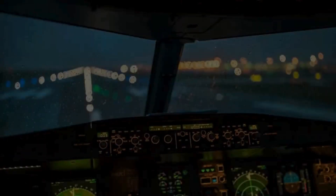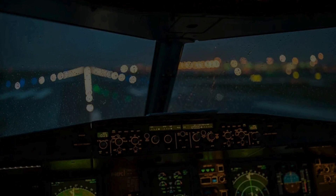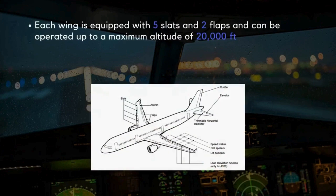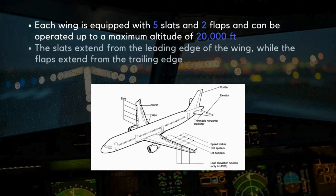First, let's look at the configuration of the A320's flaps and slats. Each wing is equipped with five slats and two flaps, and can be operated up to a maximum altitude of 20,000 feet. The slats extend from the leading edge of the wing, while the flaps extend from the trailing edge. This setup increases the wing's surface area and adjusts the airflow, allowing for slower speeds during takeoff, landing, and other phases of flight where additional lift is required.